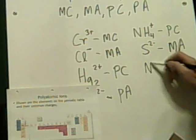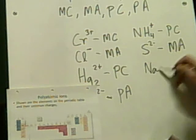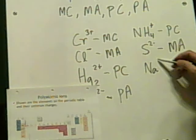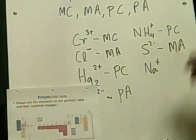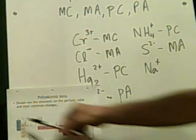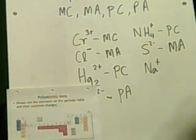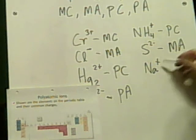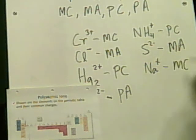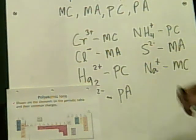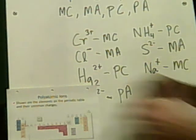And then the next one is sodium, Na plus. That's because sodium is an alkali metal. So it's monatomic, and it's a cation.